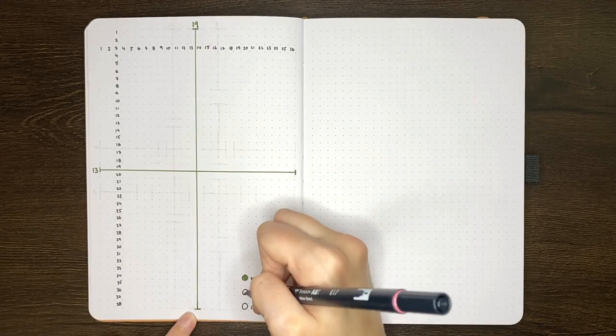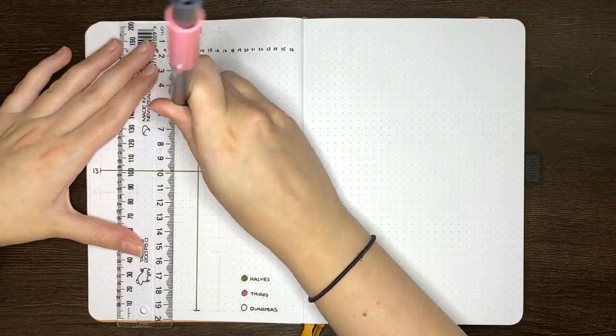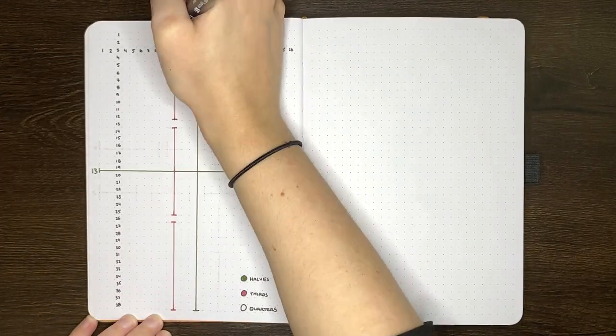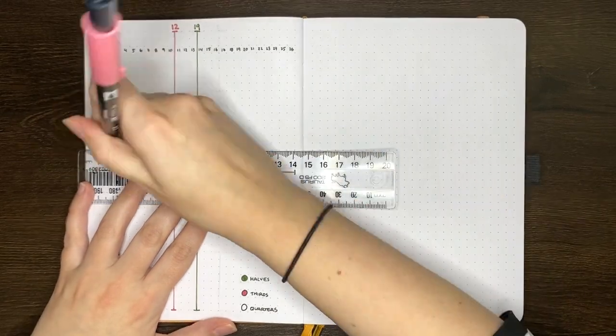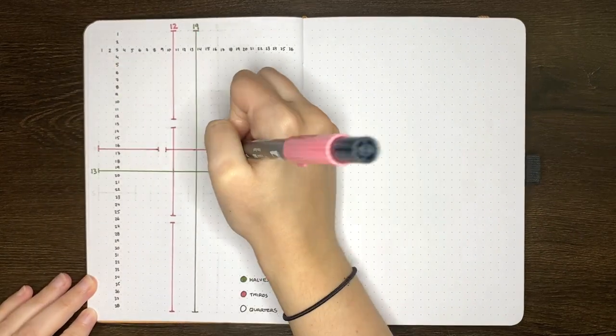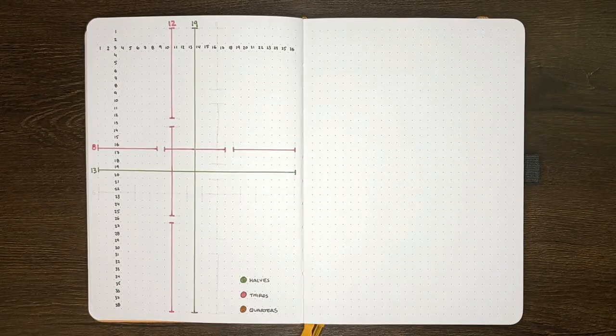In the one I'm setting up here I've got numbers running down and across the page so that I could quickly reference how many squares I have in each direction and then I'm using different colored lines to show how I can divide the page equally into columns and rows. You'll see I've also put numbers at the top and the sides of those divisions so that I can quickly see the number of boxes needed down and across for each of those divisions.